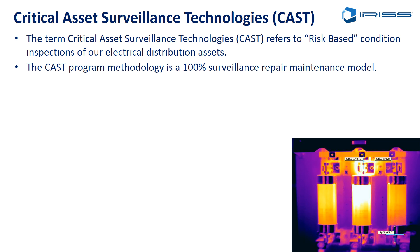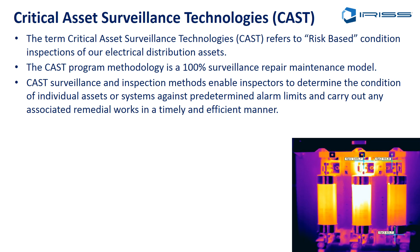We're going to inspect the equipment routinely and then react to the details of those inspections. CAST surveillance and inspection methods enable inspectors to determine the actual condition of the equipment against any predetermined alarm limits — whether that's a maximum temperature on an electrical connection or vibration limits on a mechanical generator system. As long as you understand those predetermined alarm limits, we can effectively carry out any maintenance needed in a timely fashion.